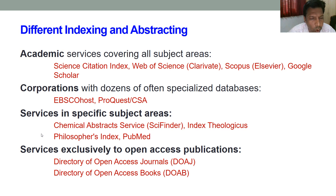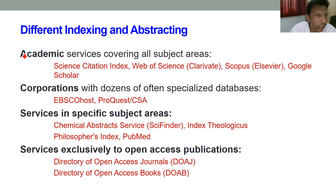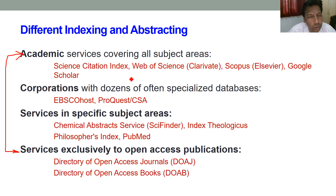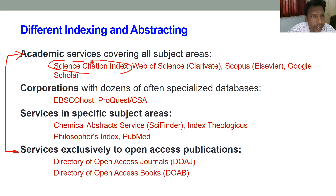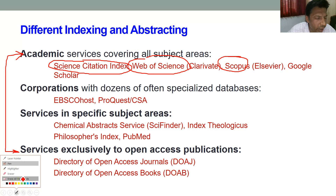There is also the Directory of Open Access Journals, which is called DOAJ, and the Directory of Open Access Books, which is called DOAB. As an academician, we are most interested in the first and last categories. If you want to judge the quality of any article, the two most important indexing systems are SCI/Web of Science and Scopus. Your journal article must be indexed in either SCI, Web of Science, or Scopus for it to be worldwide accepted by any agency or accreditation system.